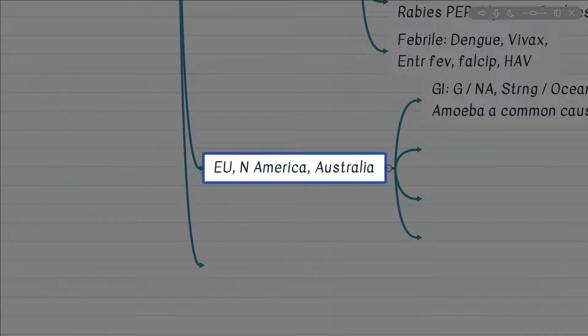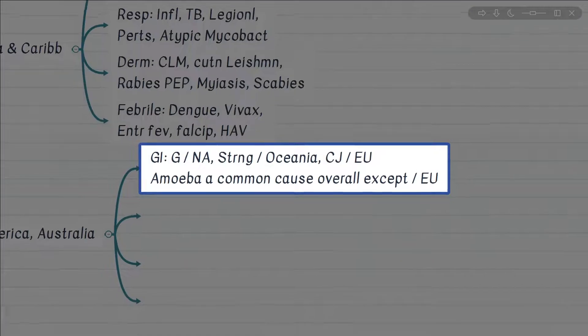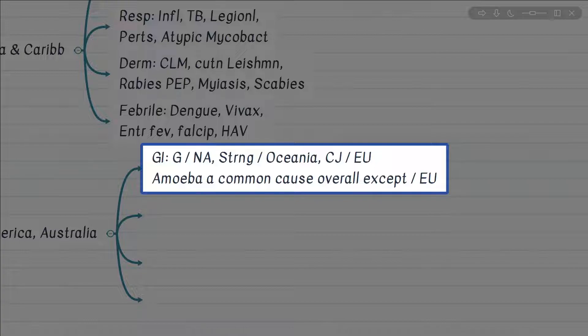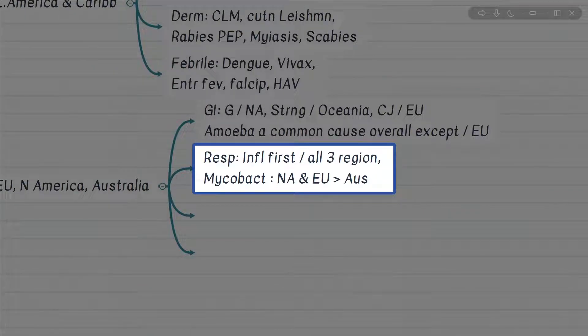Let's discuss some epidemiologic data from developed countries — European Union, North America, and Australia. For GI, the leading cause of diarrheal complaints from travelers from North America is Giardia; in Oceania or Australia it is Strongyloides; and in the European Union it is Campylobacter jejuni. Remember, amoebas are a common cause of overall diarrheal disease in developed countries except in Europe. The leading cause of respiratory illness in developed countries is influenza. Note these are statistics prior to the current pandemic. The most common infectious dermatologic complaint among travelers to these developed countries is requirement for rabies post-exposure prophylaxis.